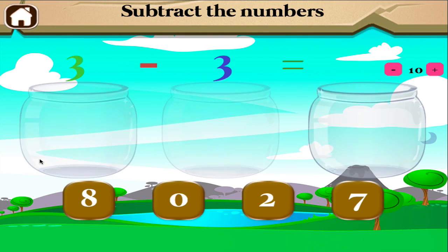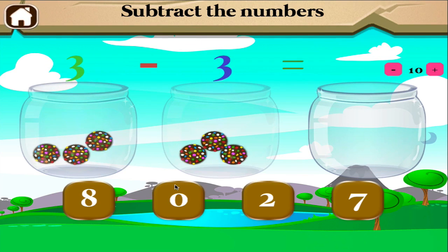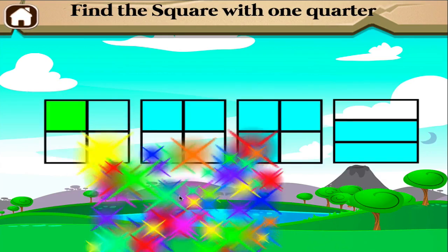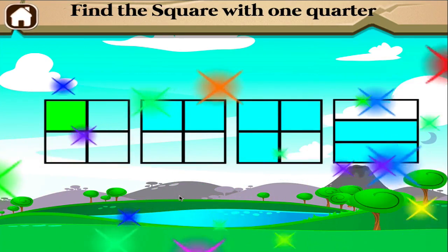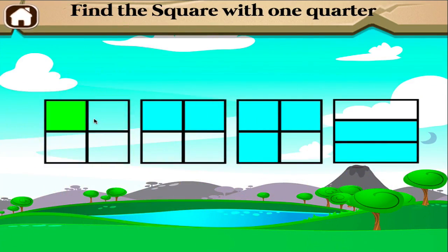Three minus three equals... Find the square with one-quarter. Good job!